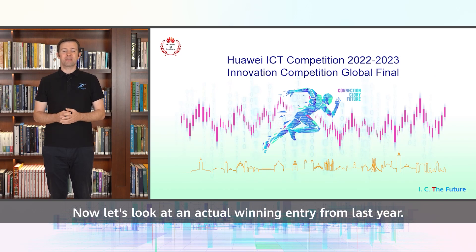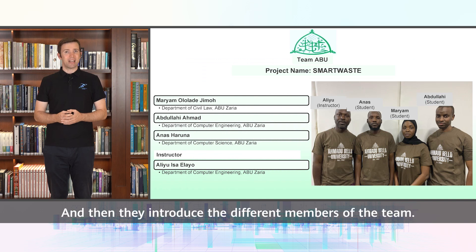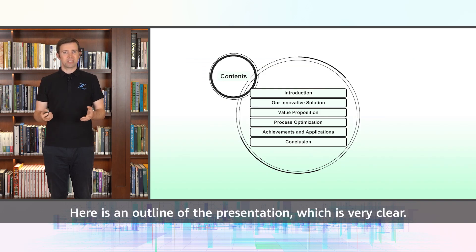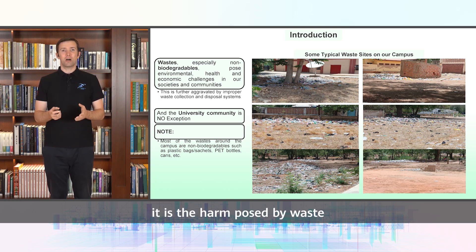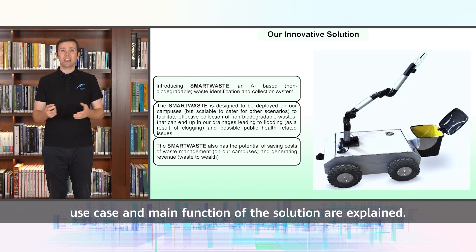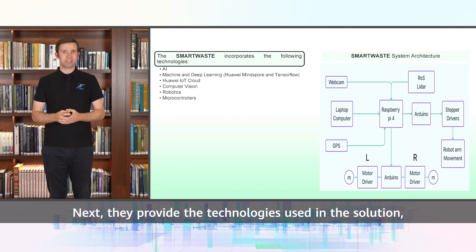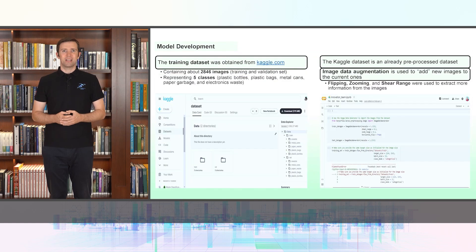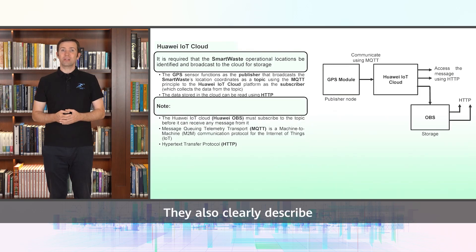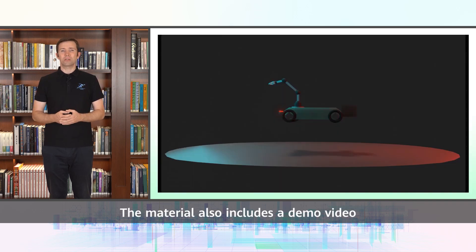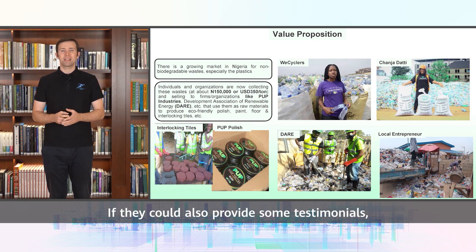Now, let's look at an actual winning entry from last year. Here, they give a brief introduction to the team and introduce the different members. Here is a clear outline of the presentation. This is a good example — they first explain the problem they are going to solve, in this case the harm posed by waste that isn't properly disposed of. Then the name, positioning, use case, and main function of the solution are explained, and we can also see the appearance of the solution. Next, they provide the technologies used in the solution and show the system architecture, as well as the concept and design flow. It also shows the model development process and the technology used, including snippets of actual code, and they clearly describe which Huawei technologies are used. The material also includes a demo video showing the solution in operation, and they show the value proposition of the solution. If they could also provide some testimonials, that would be even better.